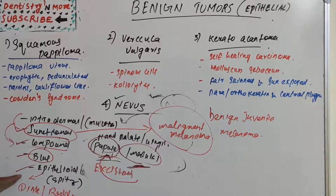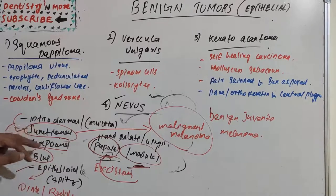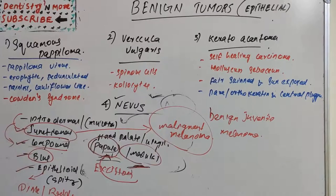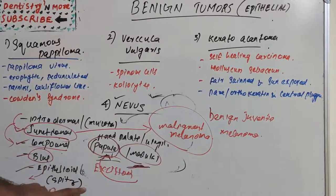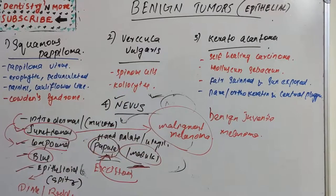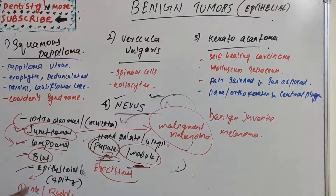To summarize, we have five types of nevus: intradermal or intramucosal, junctional, compound, blue, and epithelioid Spitz nevus. Compound nevus shows a mixed pattern of both intradermal and junctional components in the basal region and connective tissue. The junctional epithelium has the potential to change into malignant melanoma. Most lesions are seen on the hard palate and gingiva, and treatment for all is excisional biopsy.